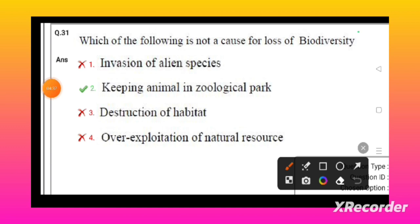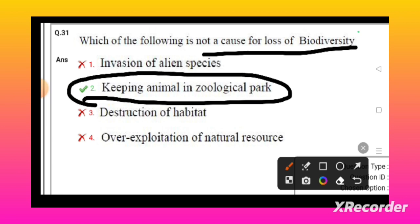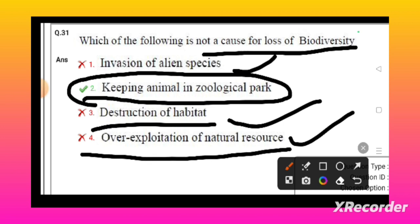Which of the following is not a cause of loss of biodiversity? Keeping animals in the zoological park is protection, not loss. Invasion of alien species leads to loss of biodiversity. Destruction of habitat leads to biodiversity loss, and overexploitation of resources also leads to biodiversity loss.